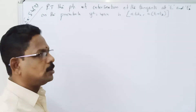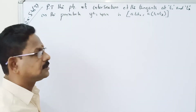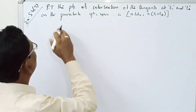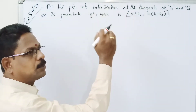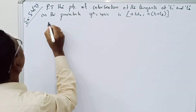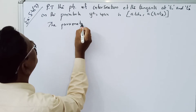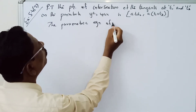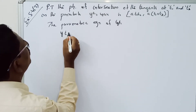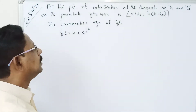Welcome to the point of intersection of tangents at t1 and t2 — parametric equations on the parabola. The parametric equation of the tangent is: yt = x + at².